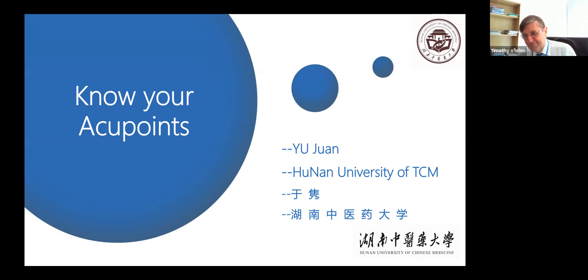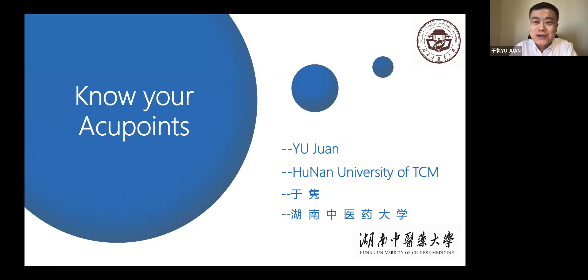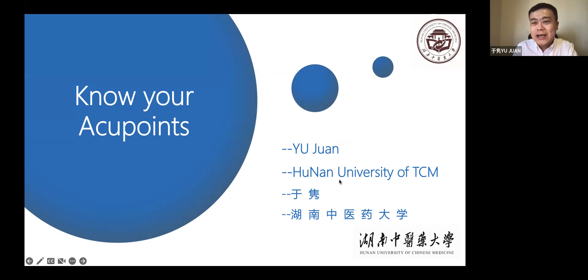Good morning, everyone. Because my WiFi signal is not so stable today, if my screen is frozen please let me know. It is a great honor to be invited to this seminar and share my experience of learning traditional Chinese medicine. My name is actually Yu Jun. This is quite an annoying name — it needs to be pronounced 'Jun' when used as a person's name, meaning intelligent or very clever.